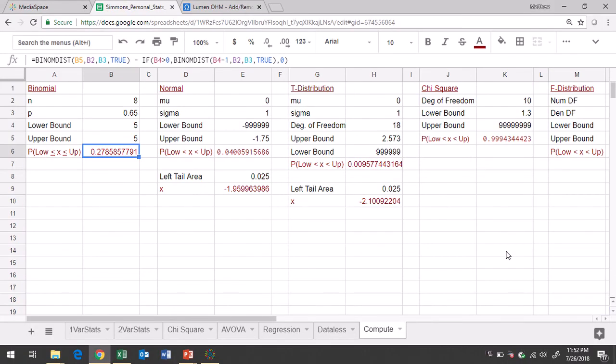If you're not there already, make sure you're in the compute tab. The number of trials would be six and then the probability of success is 0.5. For my first part, my lower bound was four and upper bound was six. This gave me a probability of 0.3438 rounded to four decimal places.